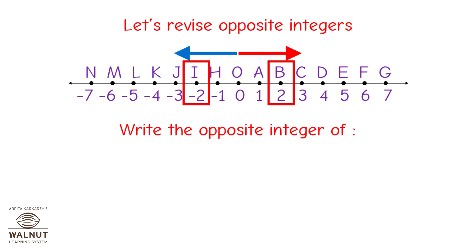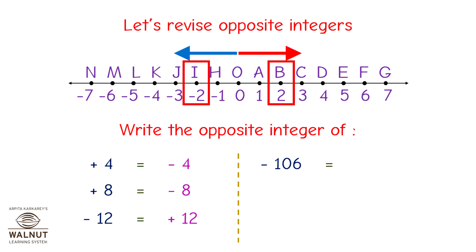Write the opposite integer: the opposite of +4 is −4; the opposite of +8 is −8; the opposite of −12 is +12; the opposite of −106 is +106; the opposite of +215 is −215; the opposite of −99 is +99.